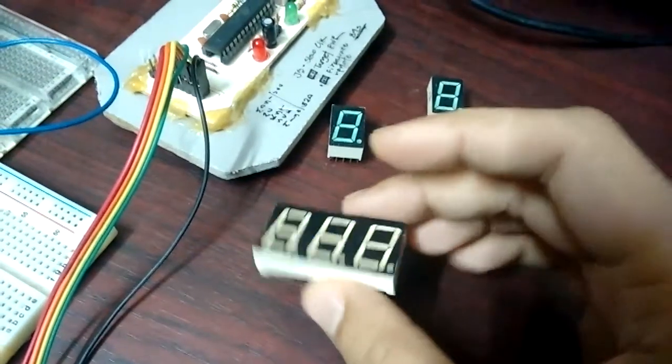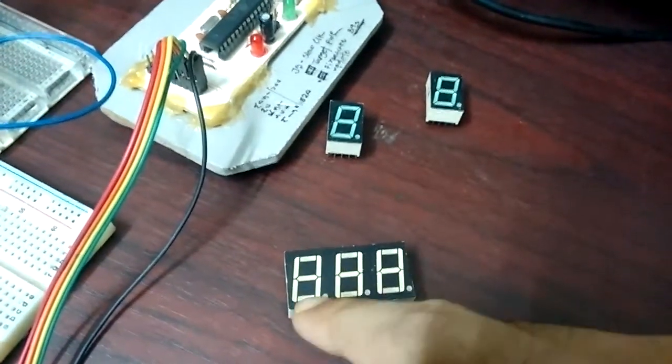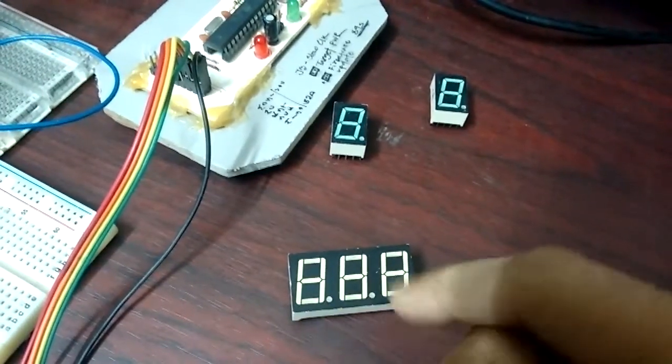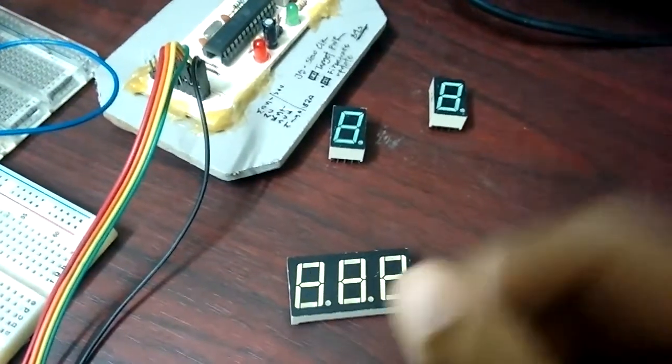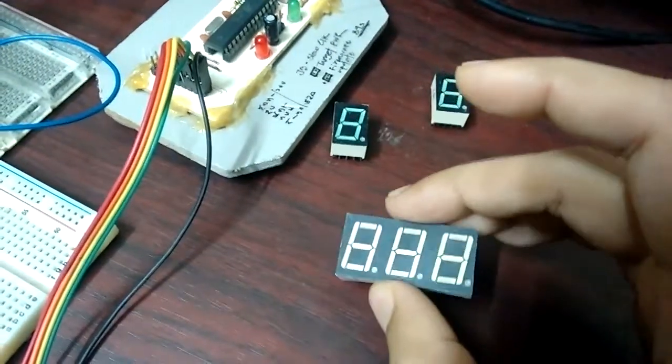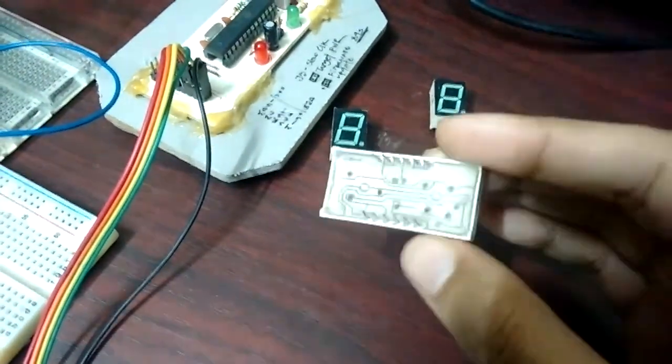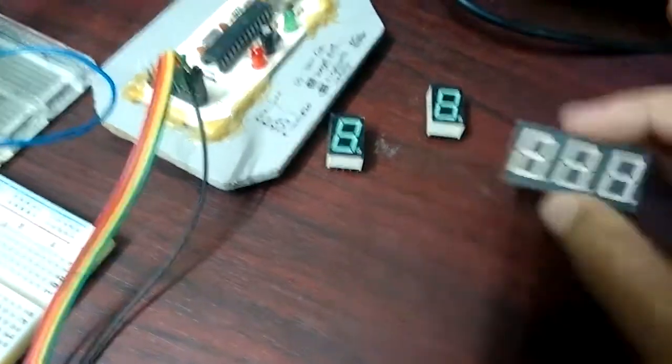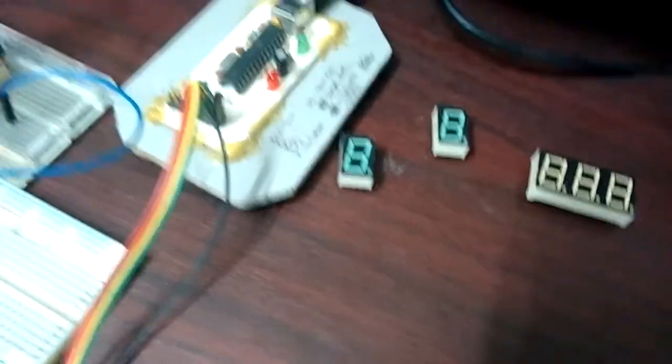And you have the common pins brought out, so whichever common pin you provide ground or VCC is the one that lights up. I would use this, but let's just talk about the problem here.